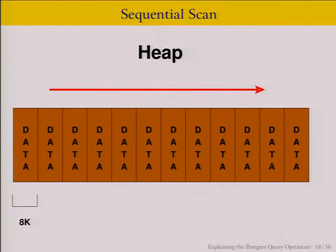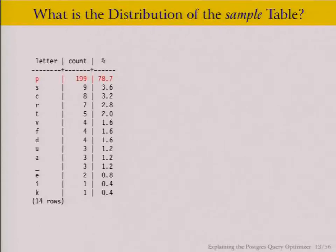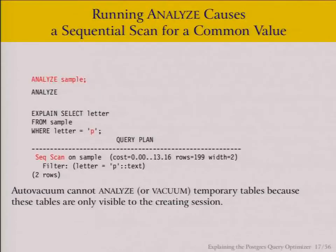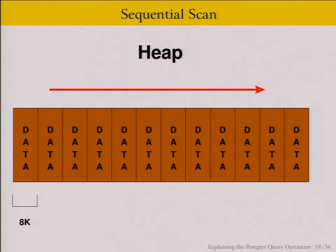A sequential scan means: start at the beginning of the table, read all the rows to the end. Very straightforward — just read everything. Why choose a sequential scan? Because 78% of our rows are P's. If 78% of your rows are P's, it doesn't make sense to do all sorts of index lookups just to eliminate 22% of your rows. We're just going to read straight through the table.